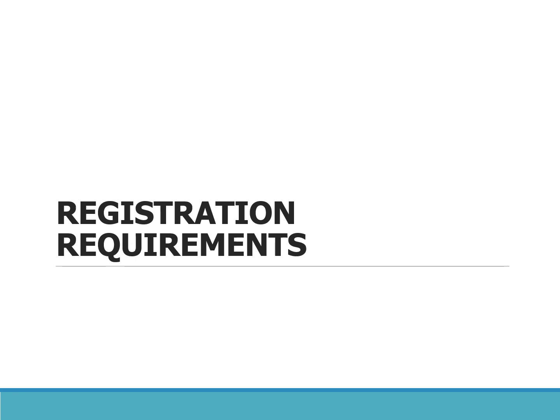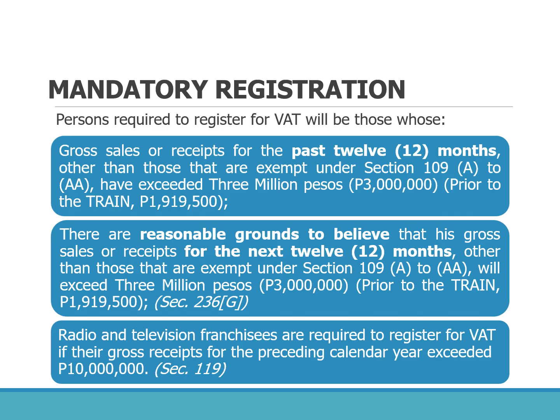Now we go to the registration requirements for VAT. There are two classifications: mandatory registration and optional registration. Persons are required to mandatorily register for VAT whenever they fall under any of three conditions: first, if gross sales or receipts for the past 12 months, other than those exempt under Section 109A to AA, have exceeded 3 million pesos. Second, if there are reasonable grounds to believe that in the next 12 months, gross sales or receipts other than those exempt under Section 109A to AA will also exceed 3 million pesos.